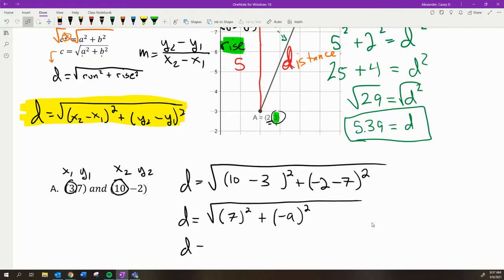And 7 to the second power is 49. And so the distance between those two points is the square root of 49 + 81, which is 130. And then on a calculator, that rounds to about 11.40 units.